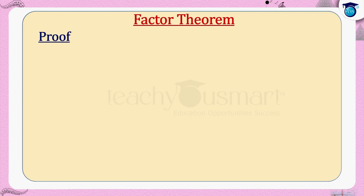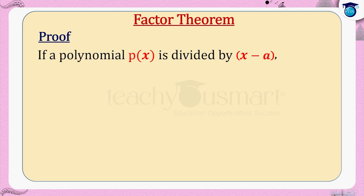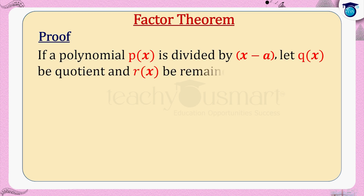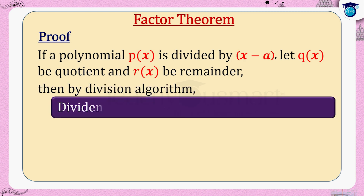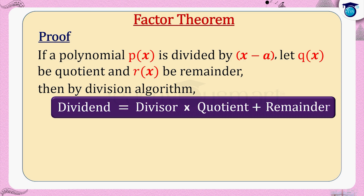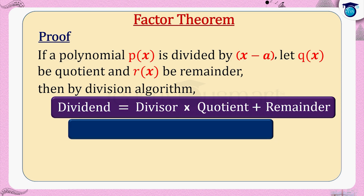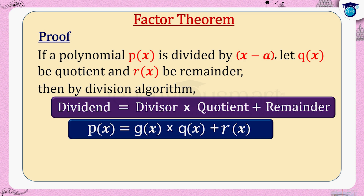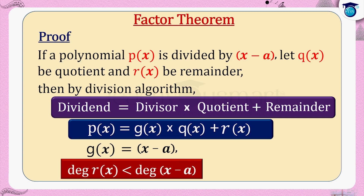Let us prove it. If a polynomial p(x) is divided by (x − a), let q(x) be the quotient and r(x) be the remainder. Then by the division algorithm: dividend = divisor × quotient + remainder, that is p(x) = g(x) × q(x) + r(x), where divisor g(x) = (x − a) and the degree of r(x) is less than the degree of divisor (x − a).